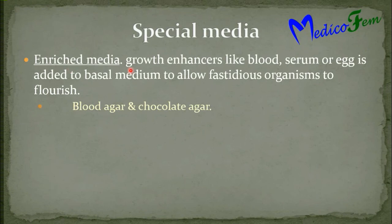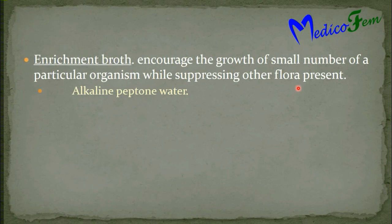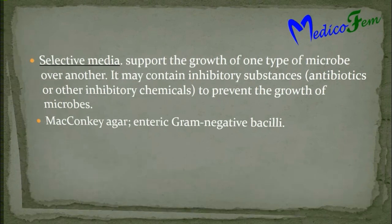Special media: enriched media has growth enhancers like blood, serum, or egg, which are added to the basal medium to allow the growth of fastidious organisms. Examples are blood agar and chocolate agar. Enrichment medium encourages the growth of a small number or small group of organisms and suppresses the other normal flora present in the specimen. Example is alkaline peptone water.